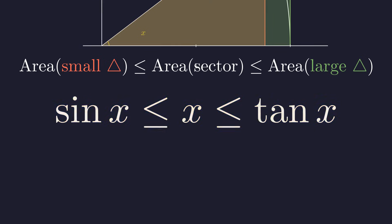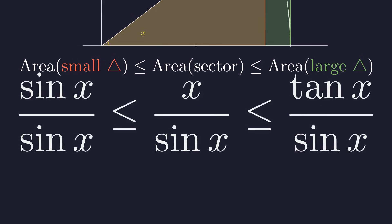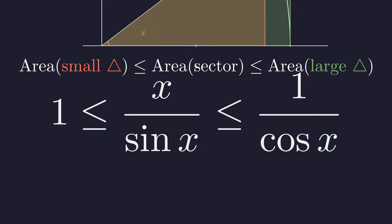Our goal is to isolate sine of x over x. Since we assumed x is a small positive angle, sine of x is also positive. Therefore, we can divide the entire inequality by sine of x without changing the direction of the inequalities. Dividing every part by sine of x gives us this expression. We know that tangent of x is sine of x over cosine of x, so this final term simplifies beautifully. The inequality now becomes: one is less than or equal to x over sine x, which is less than or equal to one over cosine x.